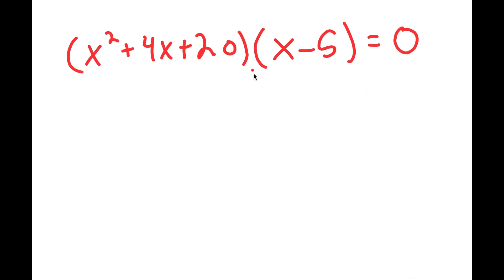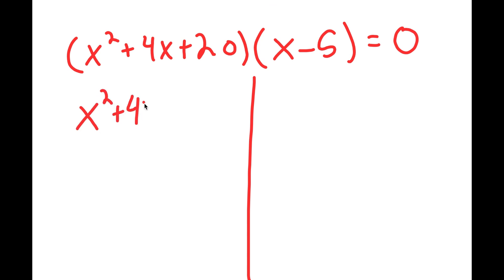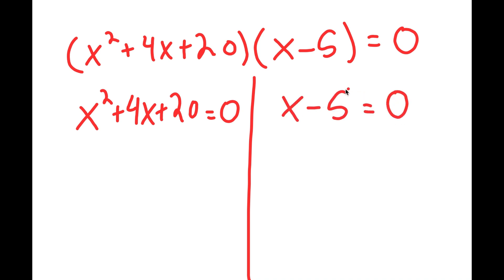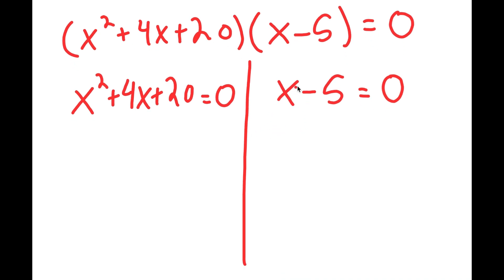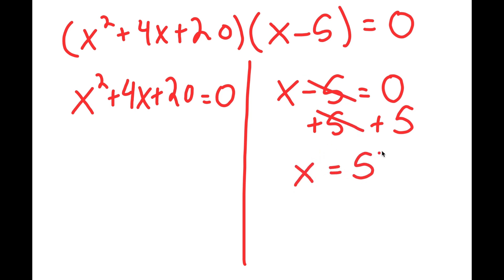This gives me two equations. I'm going to first start by solving x minus 5 equals 0. All I have to do is add 5 on both sides, and I get x is equal to 5.